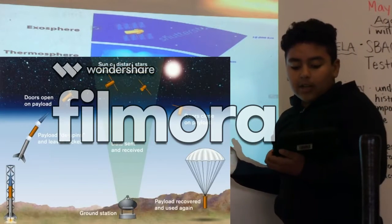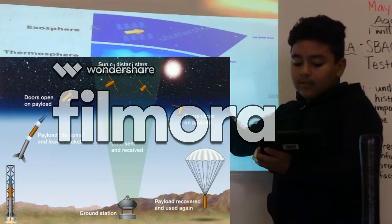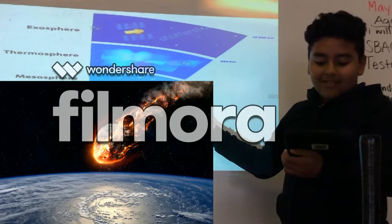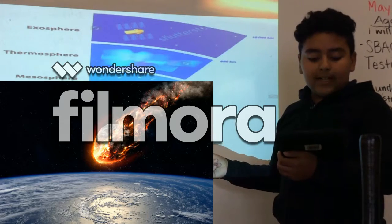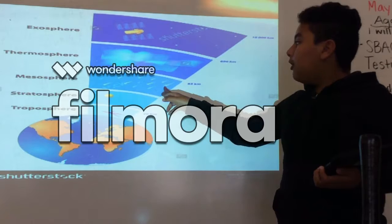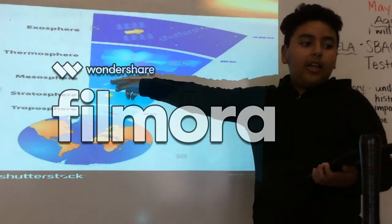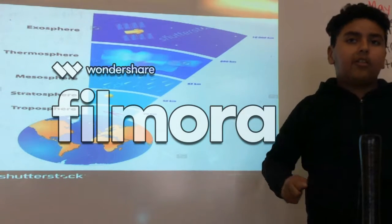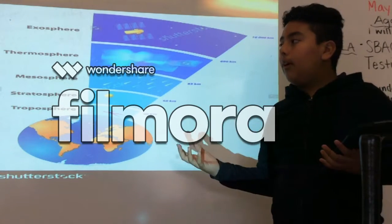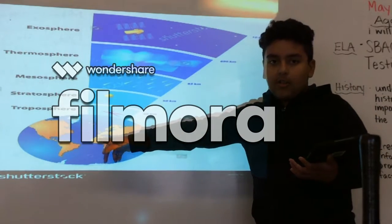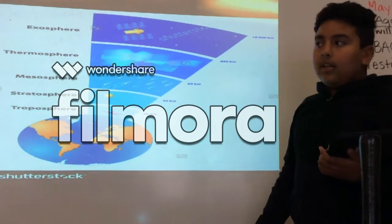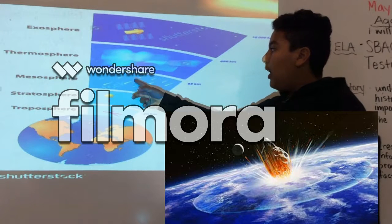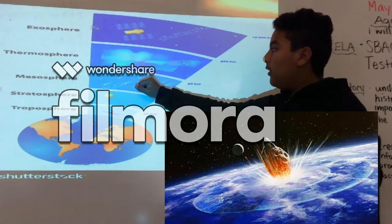The mesosphere is where sounding rockets go, and where meteors melt and dissolve so Earth can be protected. Here is where meteorites dissolve when meteors come down to Earth. That's why there are rarely meteorites crashing down to Earth's surface. If there's a big meteorite coming down, it won't fully dissolve because it's not like a small speck of a meteorite.